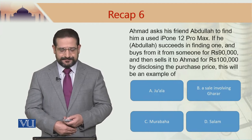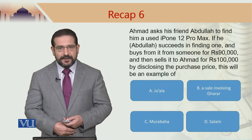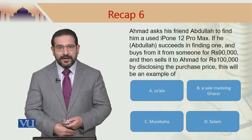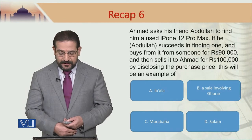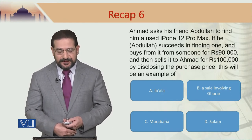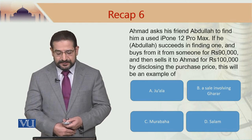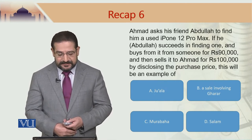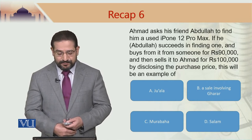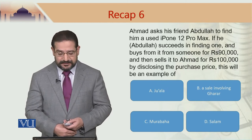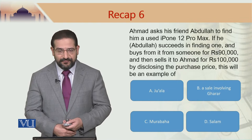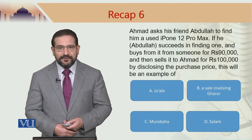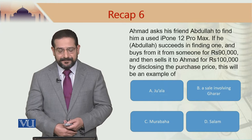Let's go to our question. The question says: Ahmed asked his friend Abdullah to find him a used iPhone 12 Pro Max. If Abdullah succeeds in finding one and buys it from someone for 90,000 rupees and then sells it to Ahmed for 100,000 rupees by disclosing the purchase price, this will be an example of: A) Juala, B) a sale involving Gharar, C) Murabha, or D) Salam.